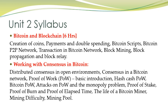This is the syllabus of Unit 2, which is divided into two parts. The first part is about Bitcoin and the Bitcoin network. The second part is about the consensus mechanism in the Bitcoin network. We have to study different security mechanisms like proof of work, hashcash, Bitcoin proof of work, attacks on proof of work, monopoly problem, and proof of stake. We are currently studying the first part of Unit 2, which includes topics like payments and double spending.